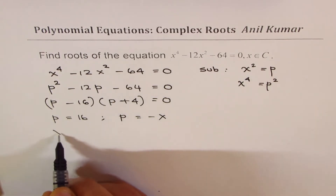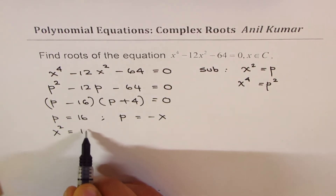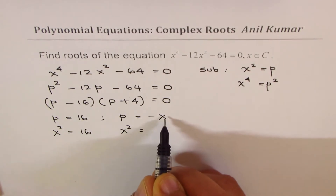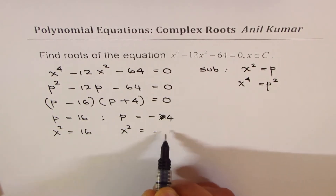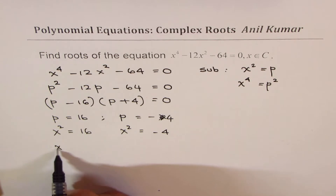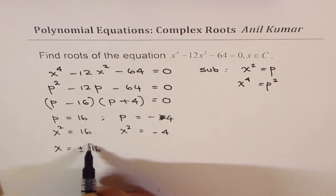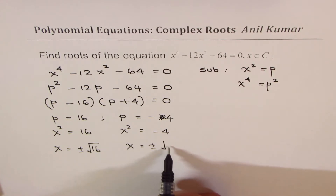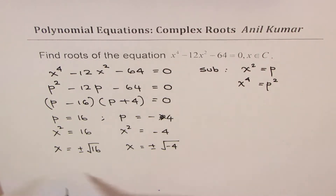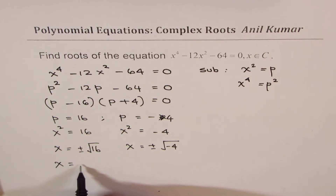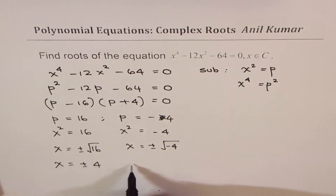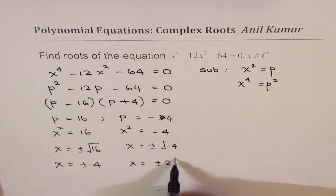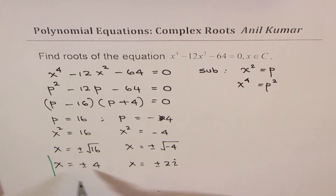p is x squared, so we can write x squared equals to 16 and x squared equals to minus 4. That gives you x equals to plus or minus square root of 16, and x equals to plus or minus square root of minus 4. So we get x equals to plus or minus 4, and in the domain of complex numbers we get the answer as plus or minus 2i.